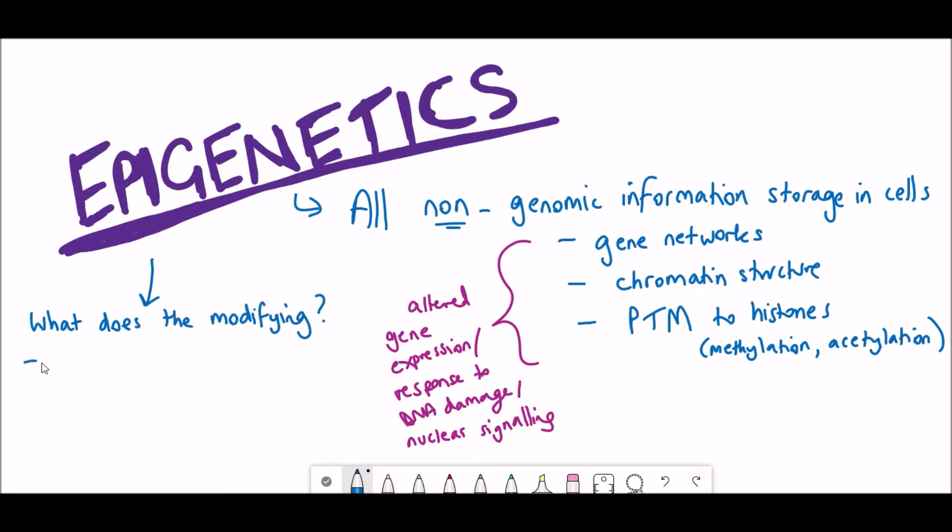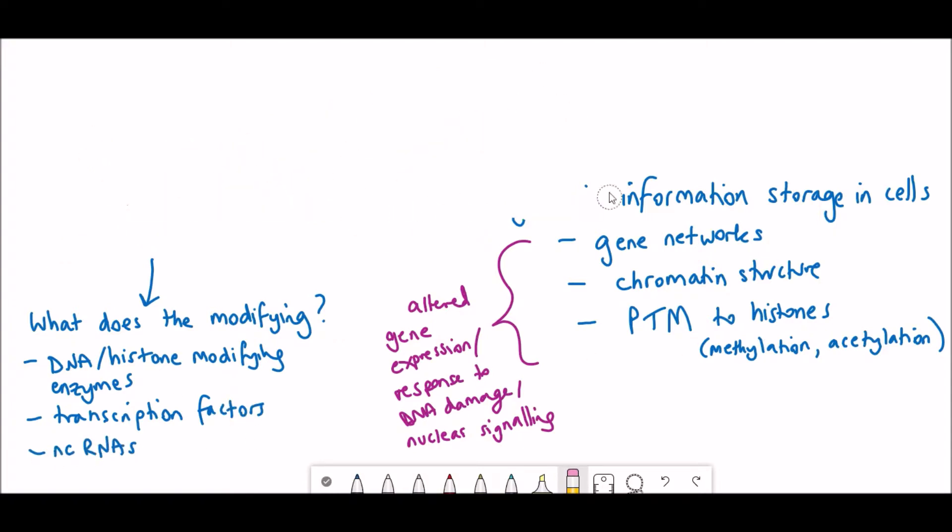These modifications are made either via proteins such as DNA or histone modifying enzymes or transcription factors, or via RNAs such as non-coding RNAs that can also alter the epigenetic patterns.